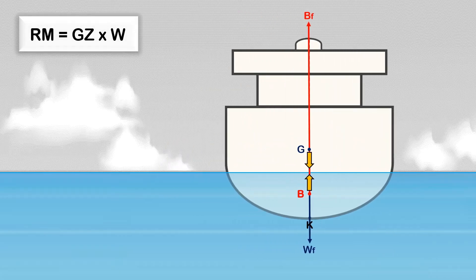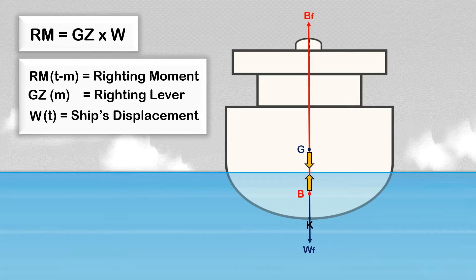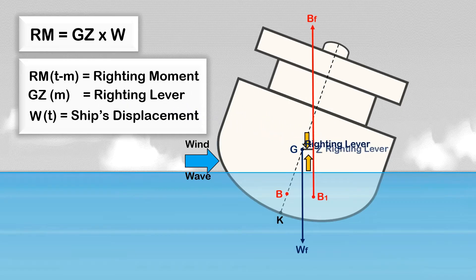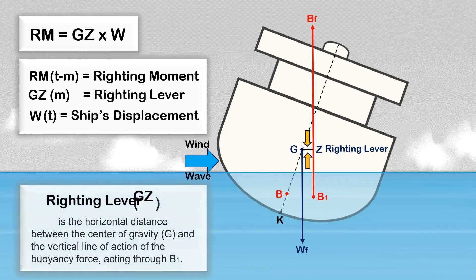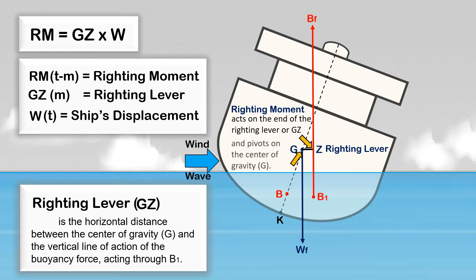This is the formula used to calculate the righting moment: RM = GZ × W, where RM is the righting moment in ton-meters, GZ is the righting lever in meters, and W is the ship's displacement in tons. When the ship is heeled, as the two vertical forces get separated, a righting lever or righting arm known as GZ is created. The righting lever is the horizontal distance between the center of gravity G and the vertical line of action of the buoyancy force acting through B1. When a righting lever exists, the moment of statical stability also exists, pivoting about the ship's center of gravity G, bringing the ship back to upright condition.